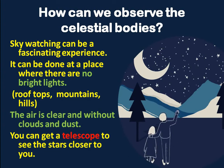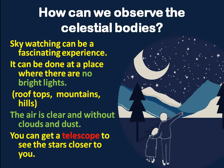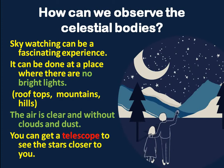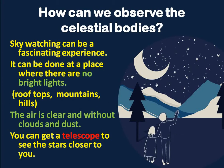Now if I want to observe a celestial body, then what should I do? I have to find a place where there are no bright lights — it can be on a rooftop, a mountain top, or a hilltop. The air should be clear, with no cloud, and the air should not be dusty. Then it is the right time to observe the celestial body. And if you have a telescope, then you will be able to see the stars much closer to you.